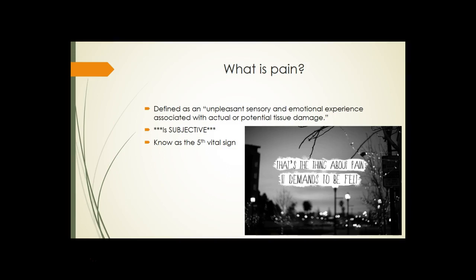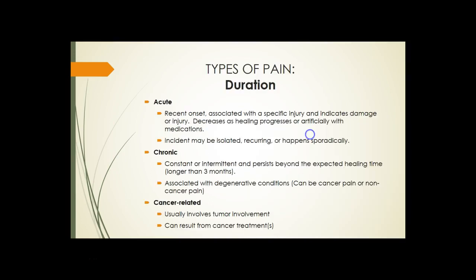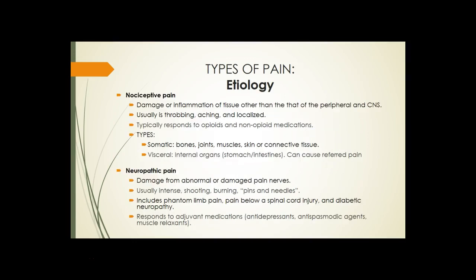Pain can be acute, which is a sudden onset, or chronic, which is usually longer than three months — so acute is less than three months. Cancer-related pain usually involves some tumor involvement and can also result from cancer treatment.